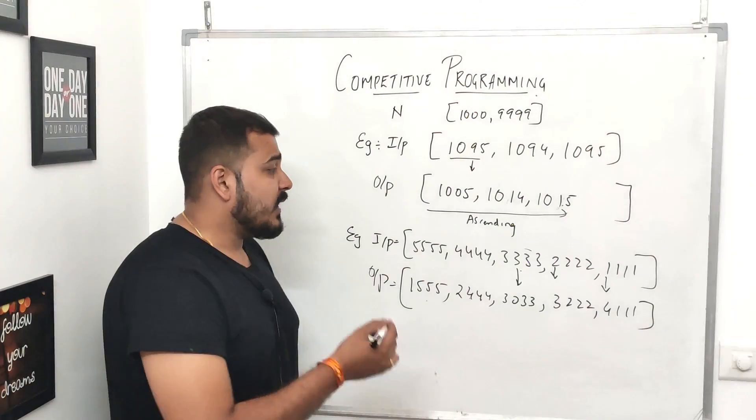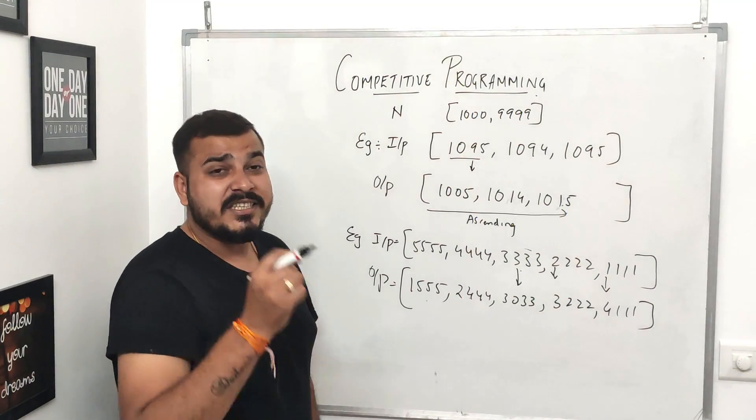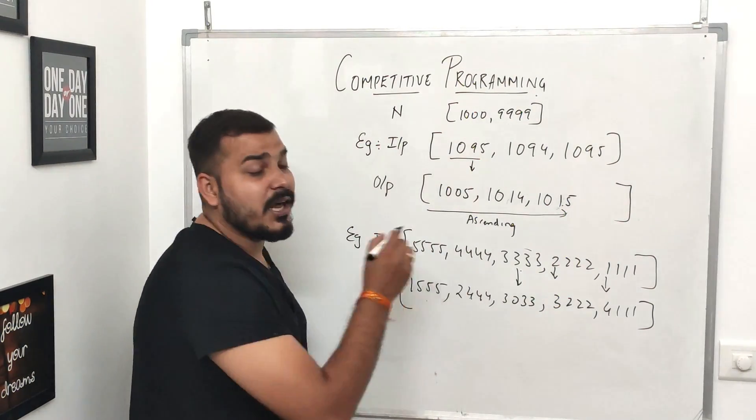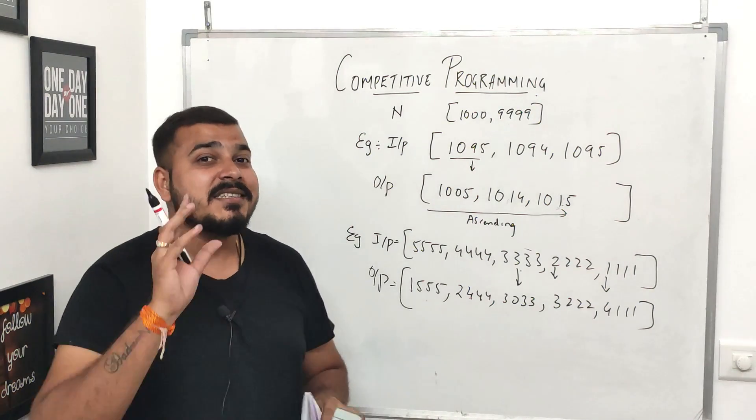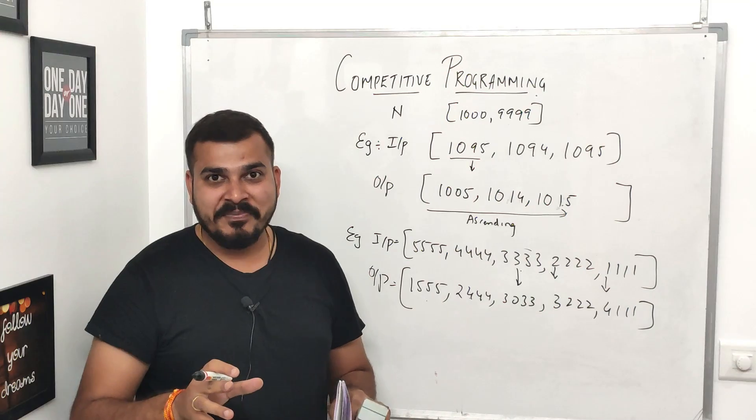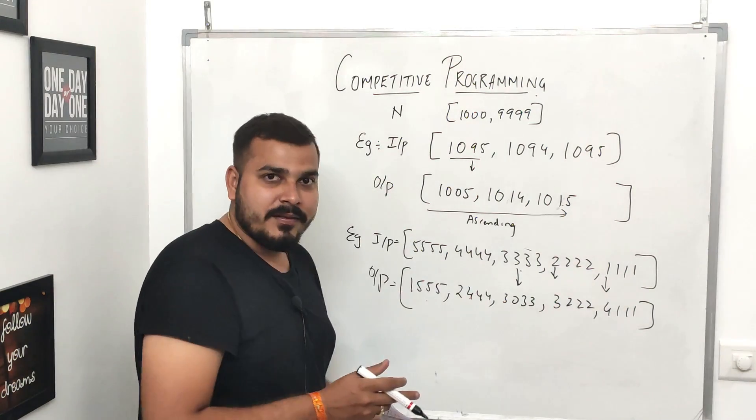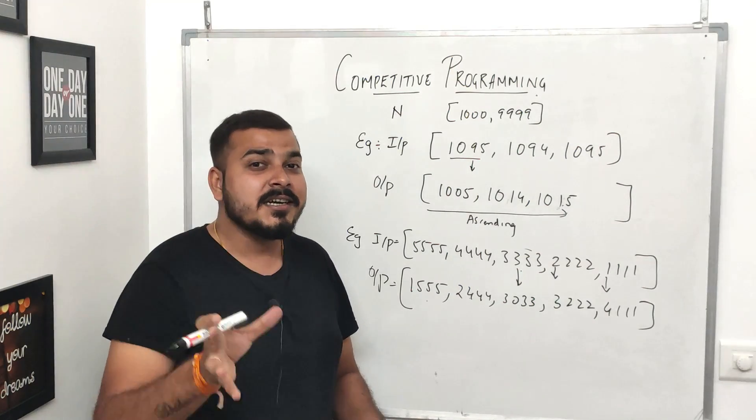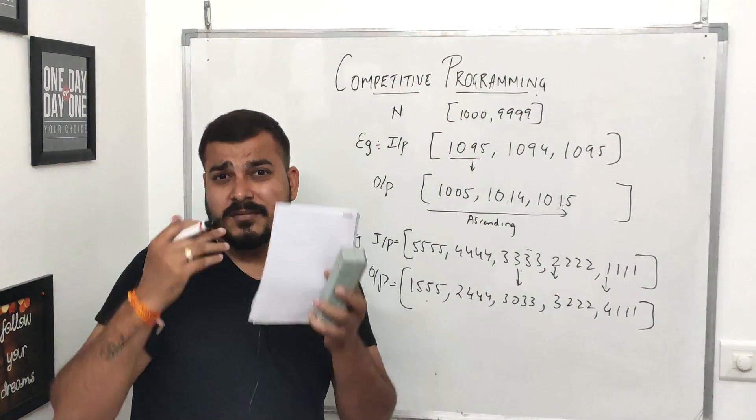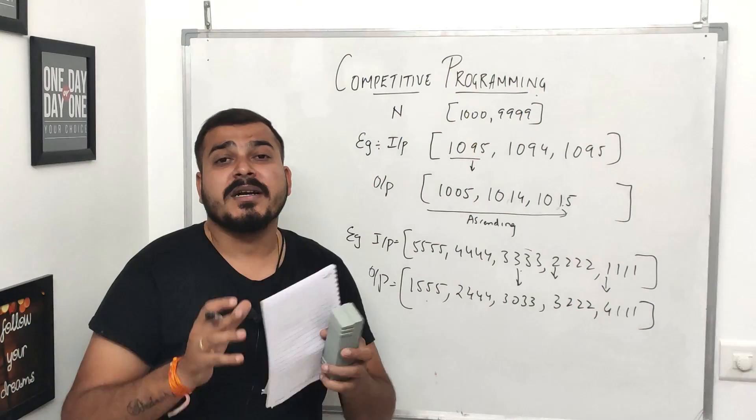Remember, in this particular problem statement, you can change any digit from that particular array element. So you have to think of this particular logic, guys. This is what is competitive programming. I know you know how to code, but writing the logic, considering the time constraint, considering the space complexity, it is pretty much important.